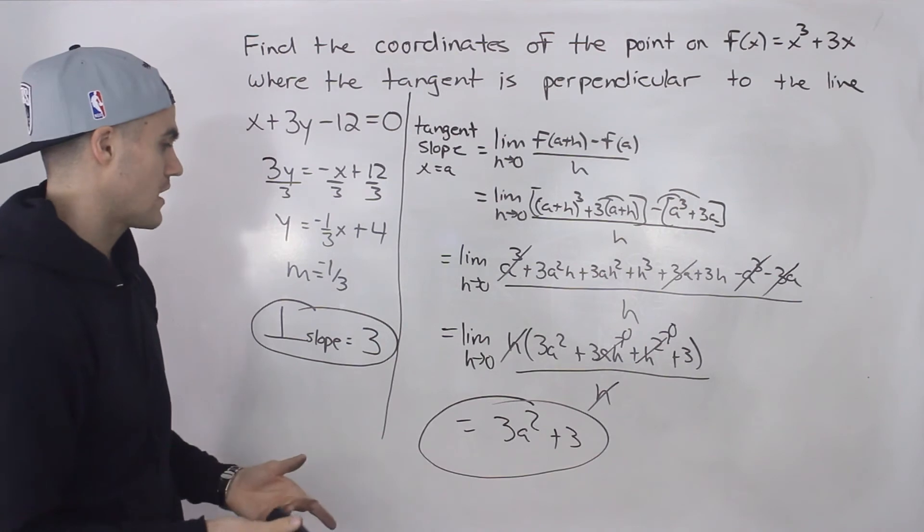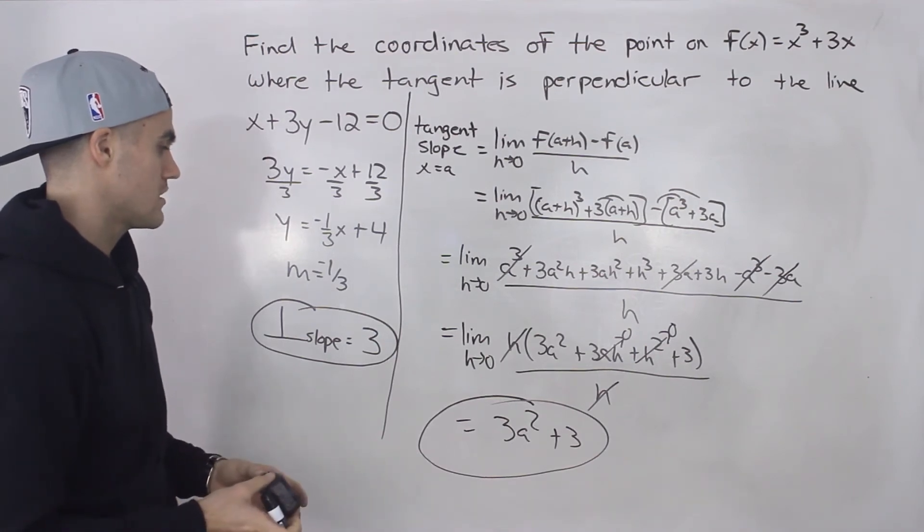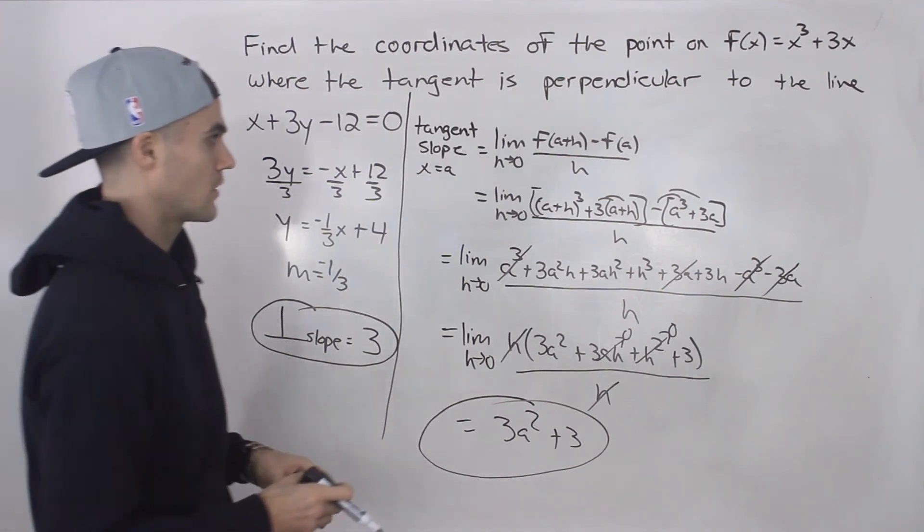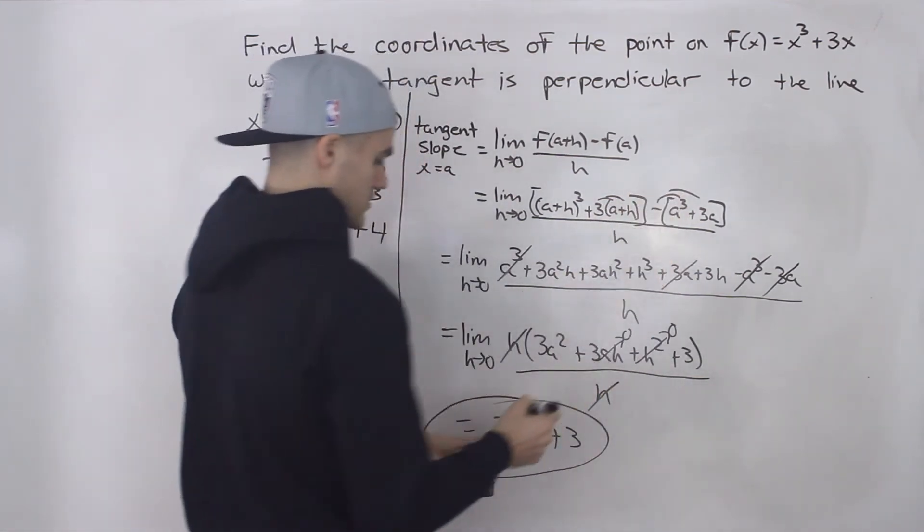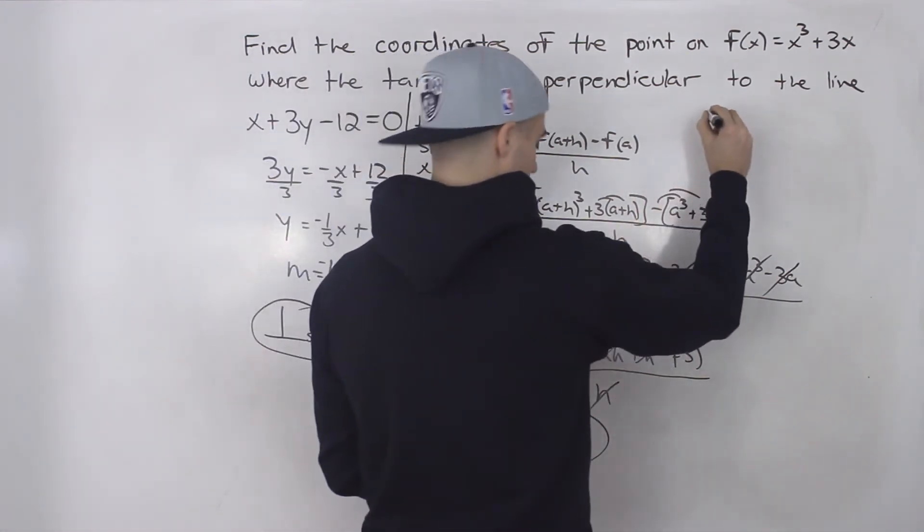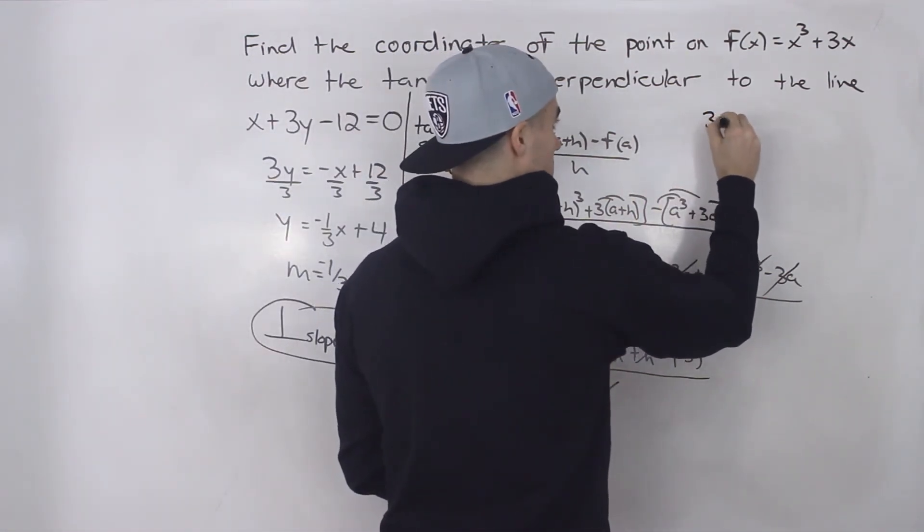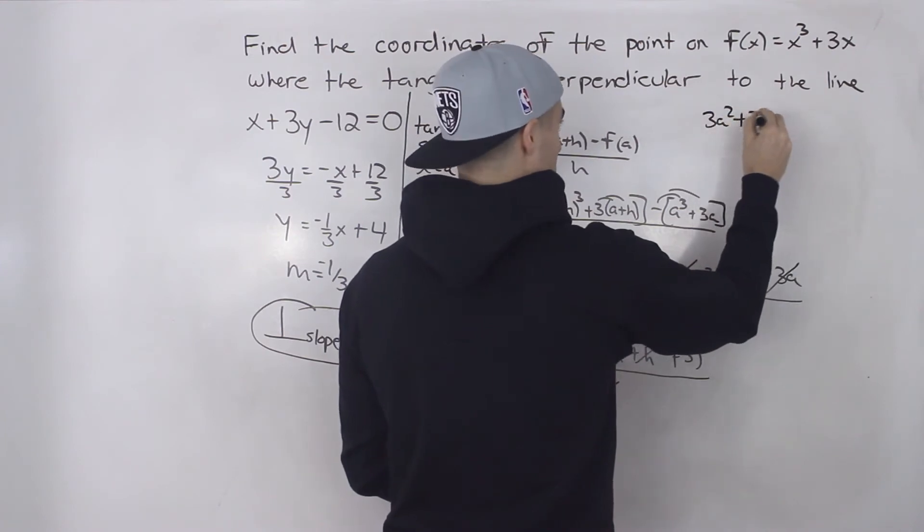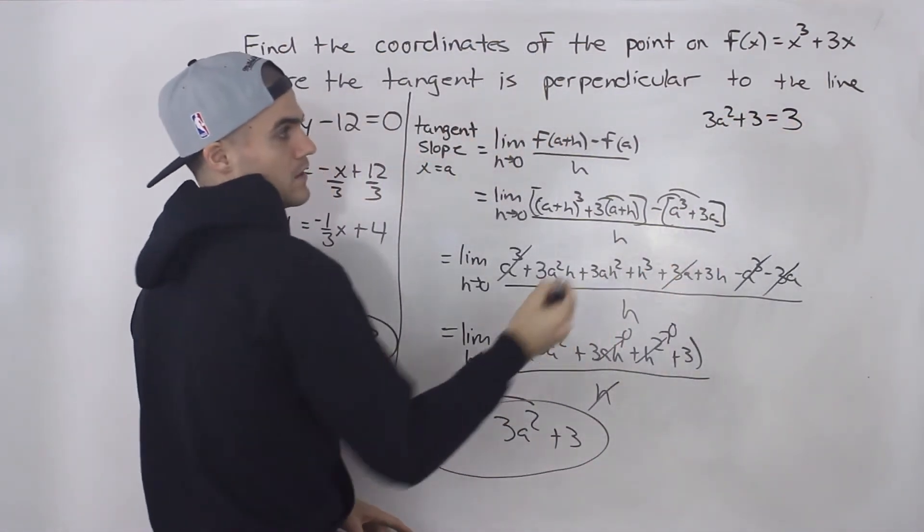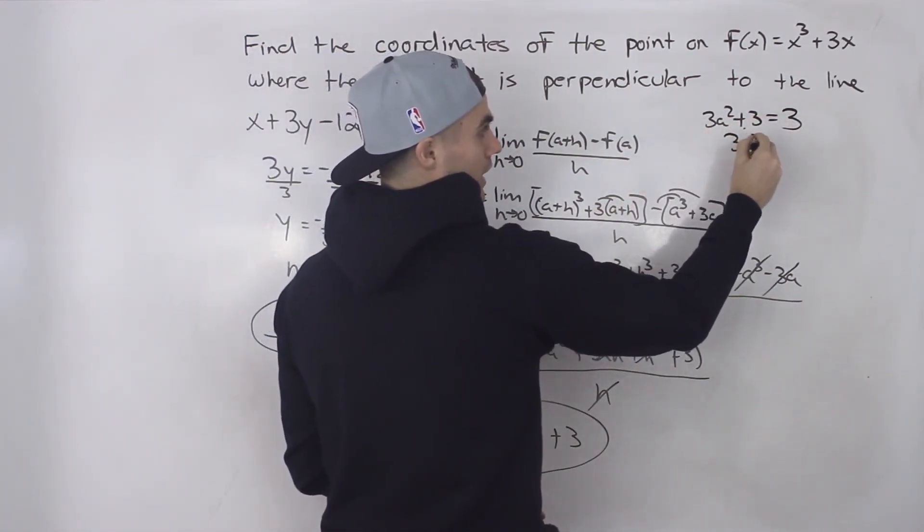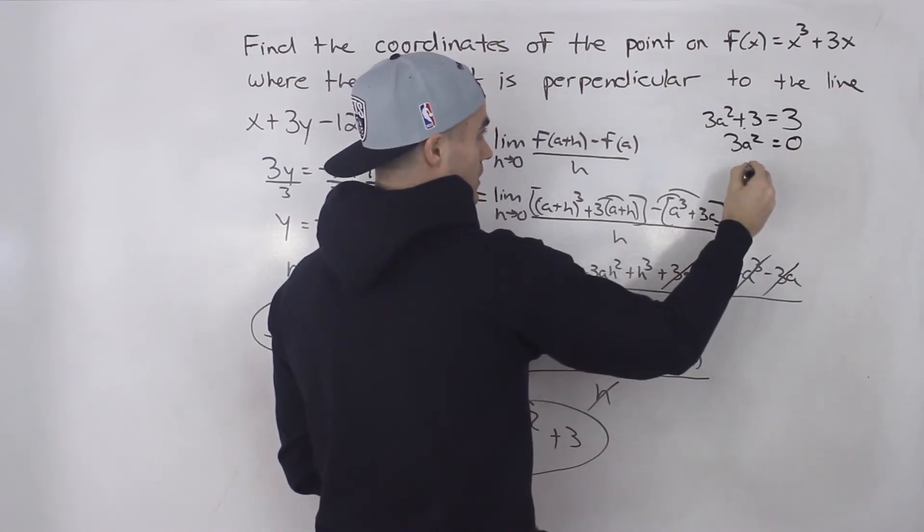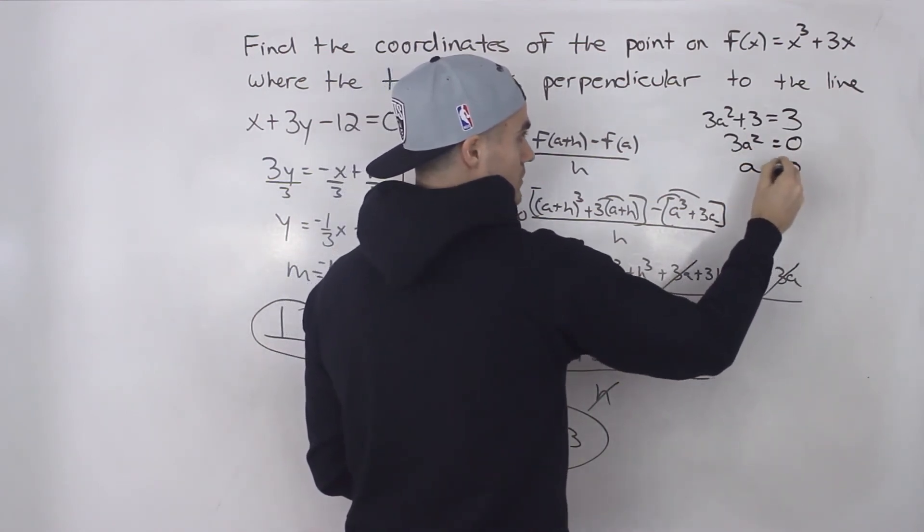But we need to find the x value where the slope of the tangent is going to equal 3. So our next step up here is we just take this expression, make it equal to 3, solve for the a value. So we got 3a² + 3 equals, when is it going to equal 3? Well, if we bring this 3 over, we'll have 3a² = 0. Divide everything by 3, that means that a has to equal 0.